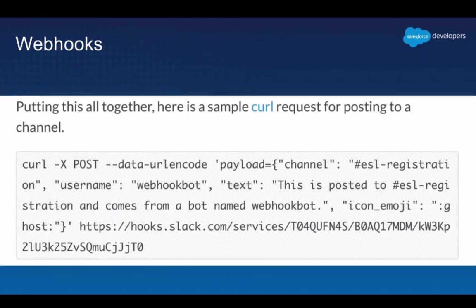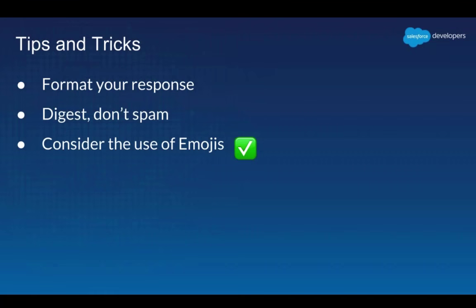Another example is the integration with Envoy, a guest registration system. Every time someone visits you in the office, they register, get a sticker, and you immediately receive a notification in Slack with their photo and name. At the technical level, a notification is simply a URL that Slack exposes — you post a JSON payload to that URL and it creates images, text, and links inside Slack.